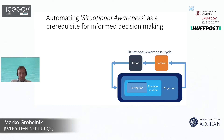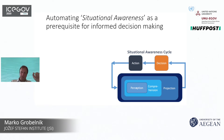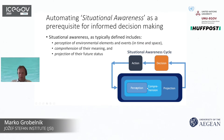There's one term I want to highlight: situational awareness. This is a prerequisite for what we can call informed decision making — decisions substantiated with proper arguments. The term consists of three major stages: perception, comprehension, and projection. Perception is capturing data and information about the system we observe — in this case, government. Comprehension is understanding what we observed, and projection is reasoning on top of that comprehension, leading to decision and action.